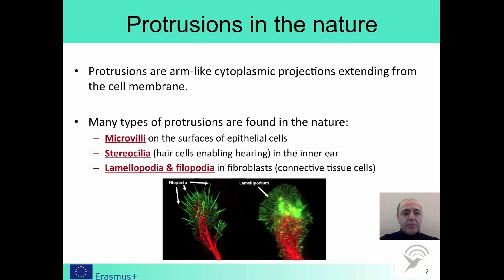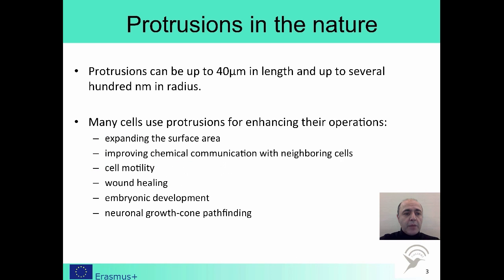You can find many types of protrusions in nature. They are found on the surface of the epithelial cells, in the inner ear, and also in the connective tissue cells. A protrusion can be as long as 40 micrometers and the radius might be several hundreds of nanometers. They can be used to expand the surface area for better reception of chemical signals from neighboring cells, for cell motility, healing wounds, embryonic development, and neuronal growth cone pathfinding.